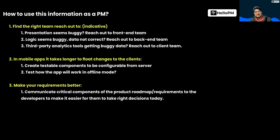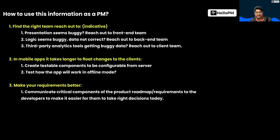If your presentation seems buggy — if you look at the front-end and think some button is off, some color is off, some information is missing, some icon is misplaced — you have to go to the front-end team; they should be able to resolve it. Every team is divided into front-end, back-end, DevOps, and so on, so you know where to go. Then, if you think the logic is buggy or the data is not correct — the app only has a responsibility to present the data, but data comes from the back-end — you have to reach out to the back-end team.